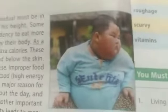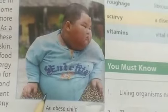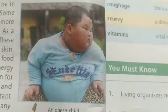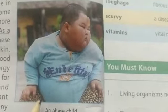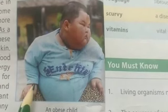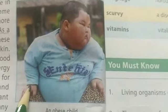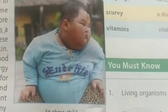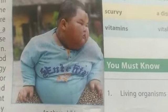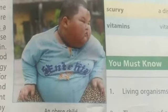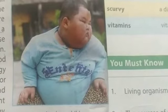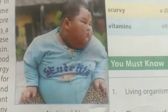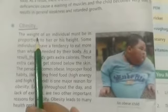You can see in the picture that eating more than the body requires — especially consuming a lot of fried food — causes a layer of fat to build up under the skin. This leads to a child becoming obese. Obesity results in many health problems such as difficulty walking and inability to exercise properly.